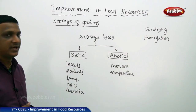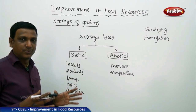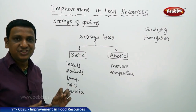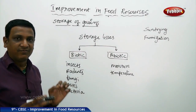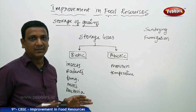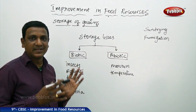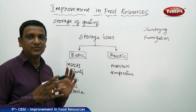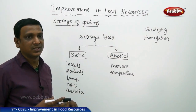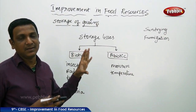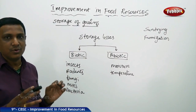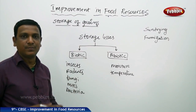Grains are to be stored properly. Certain methods can be followed, like sun drying. Drying in the sun will remove any additional unwanted moisture, and fungus or bacteria can be killed by sun drying. Fumigation is another method — passing smoke or gas containing chemicals to prevent infection by fungus or bacteria. Sun drying and fumigation can be employed to prevent storage loss and ensure good food production.